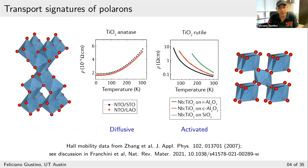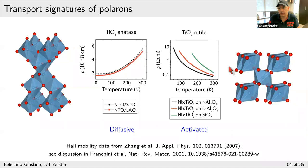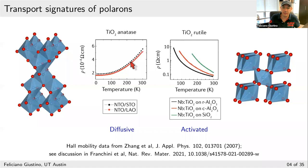I'm showing two examples from experiments. The left half of the screen shows titanium dioxide in the anatase phase — titanium in the middle, oxygen in the corners, with octahedra that are corner-sharing and some edge-sharing. The right-hand side shows titanium dioxide in the rutile polymorph. The difference between the two is the connectivity of the octahedra. The effective masses in rutile are much heavier. If you perform transport measurements — resistivity measured by the Hall effect — for anatase, the resistivity increases as a function of temperature.